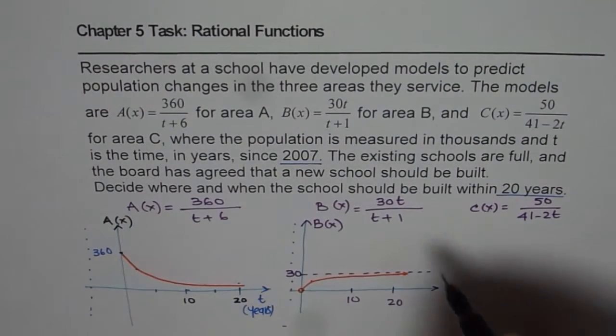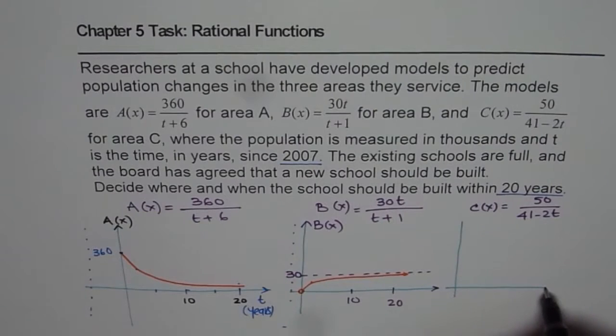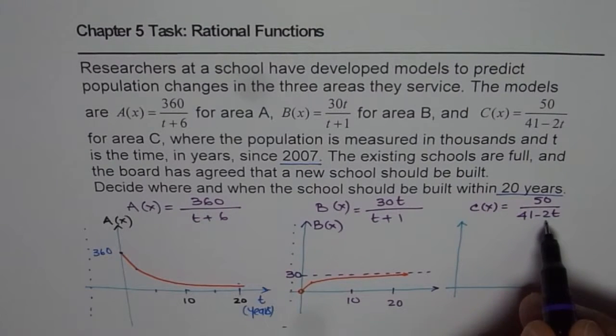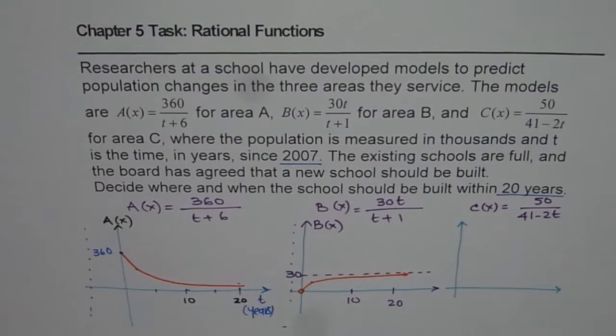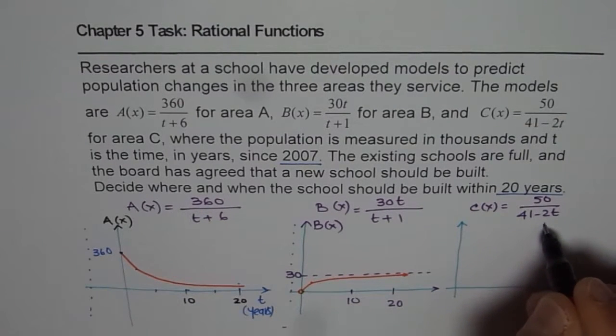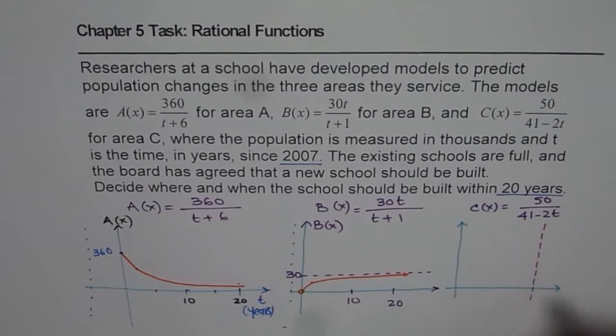Let's see how the graph of C looks like. The vertical asymptote here will be when the denominator is 0. So 41 divided by 2 will give us 20.5. So we'll have a vertical asymptote at 20.5. So here x equals to 20.5, and we are thinking about sketching our function till 20. So we are well within the reach.